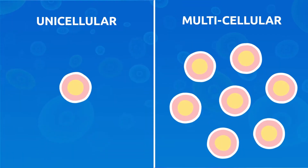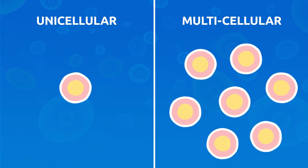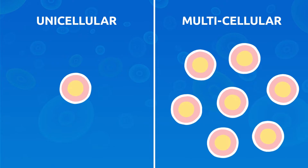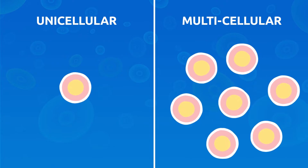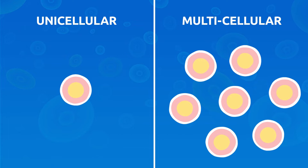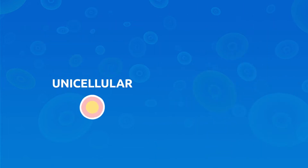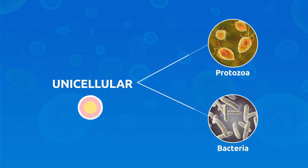There are unicellular and multicellular organisms depending on the number of cells they are made up of. Unicellular organisms are very small and they consist of one cell only. Bacteria are unicellular organisms.